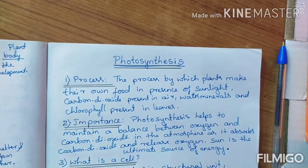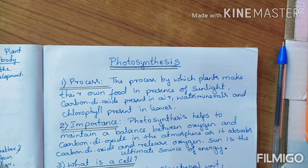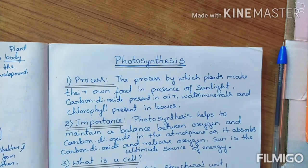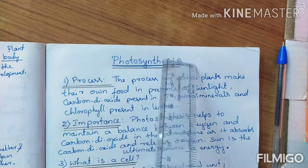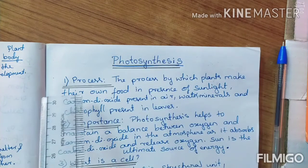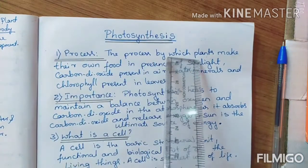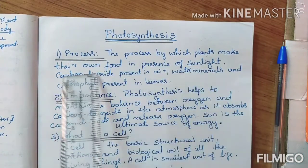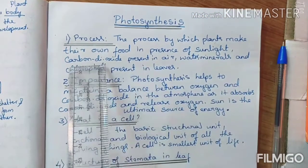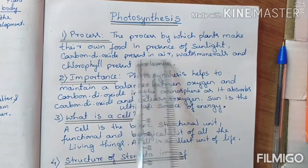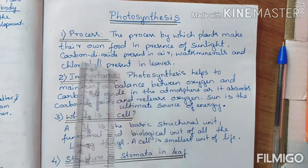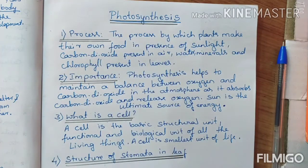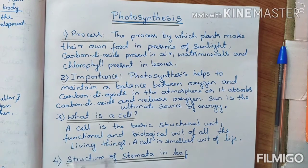Now we are going to look into the definitions and explanation of photosynthesis and the remaining headings. First, what is the meaning of photosynthesis? Photosynthesis is a process by which plants make their own food in the presence of sunlight, carbon dioxide present in air, water, minerals, and chlorophyll present in the leaves.